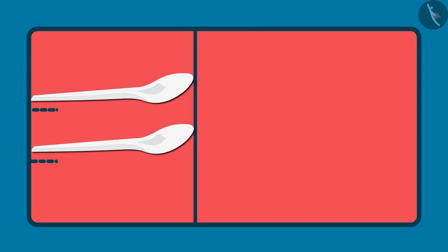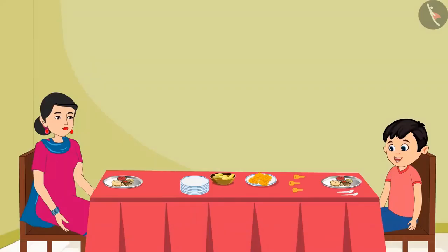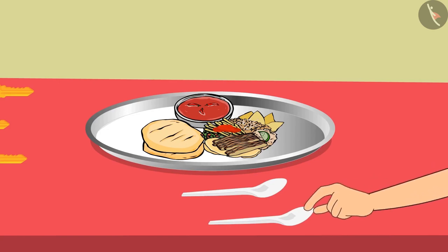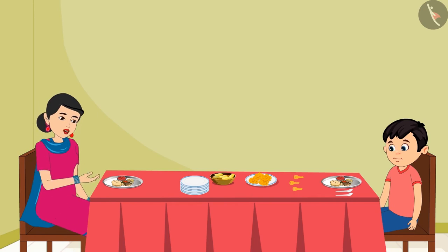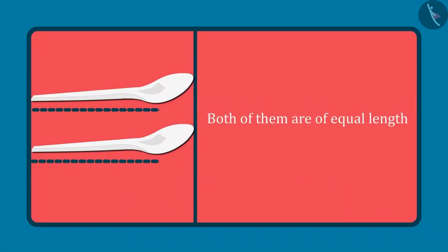Keep both the spoons together so that one end of both the spoons is together. Okay mummy, here you go. Now tell me, out of these two spoons, is either of them long or short? Or both the spoons are of the same length? Oh yes mummy, both of them are of the same length. Understood.